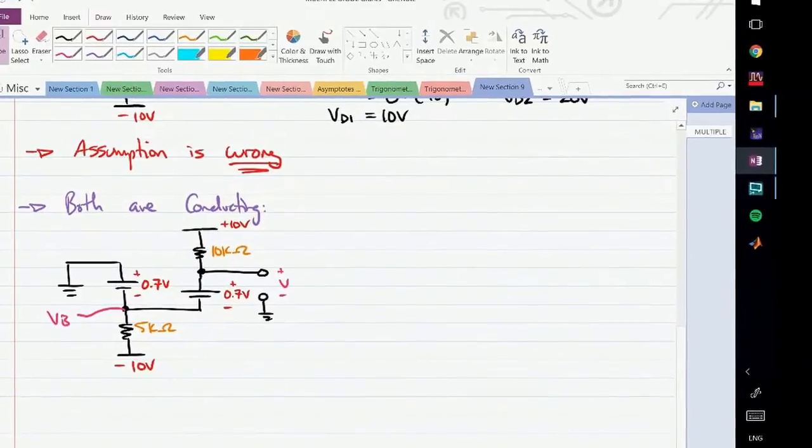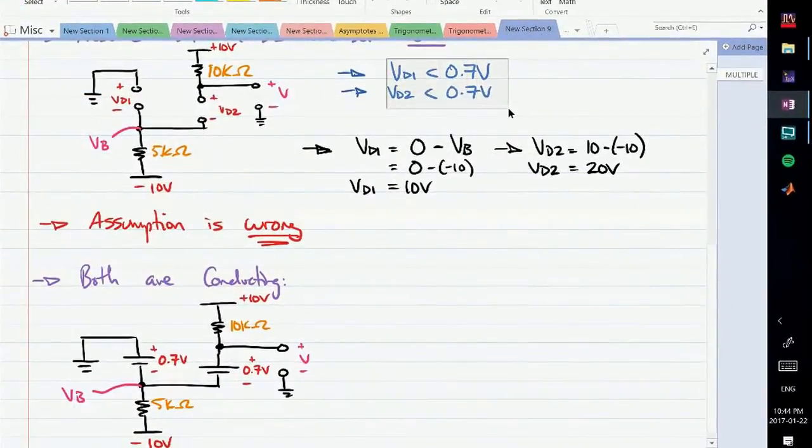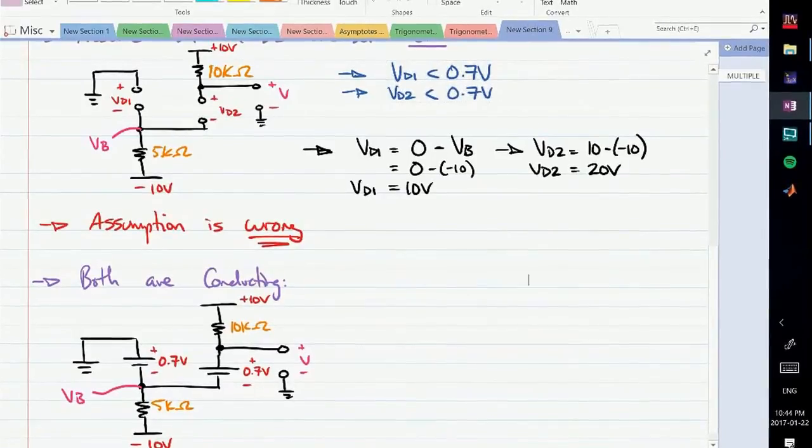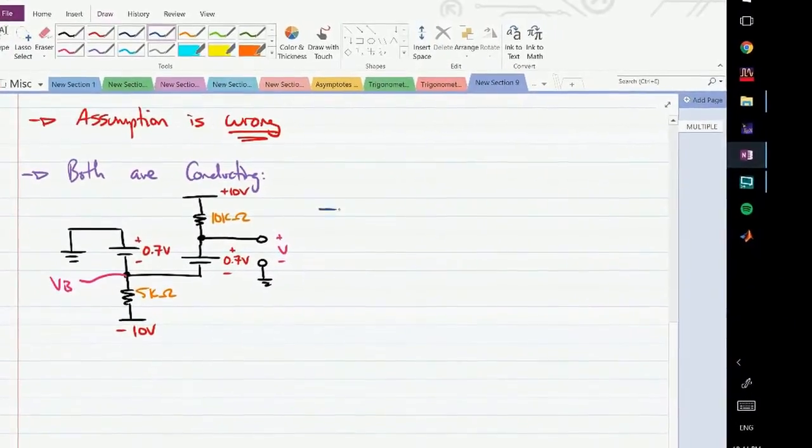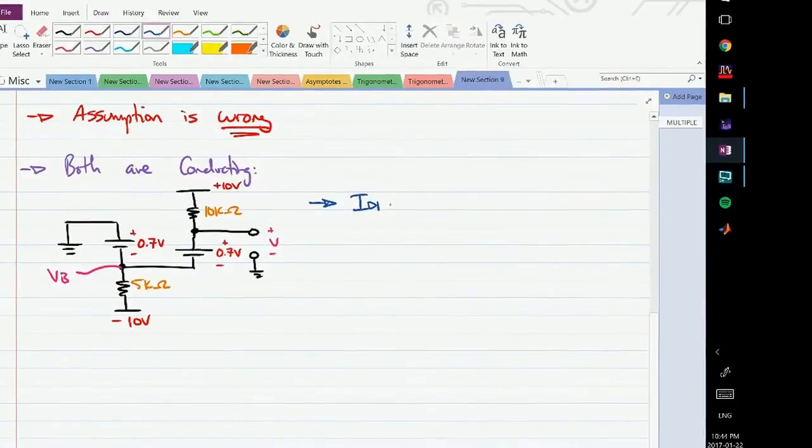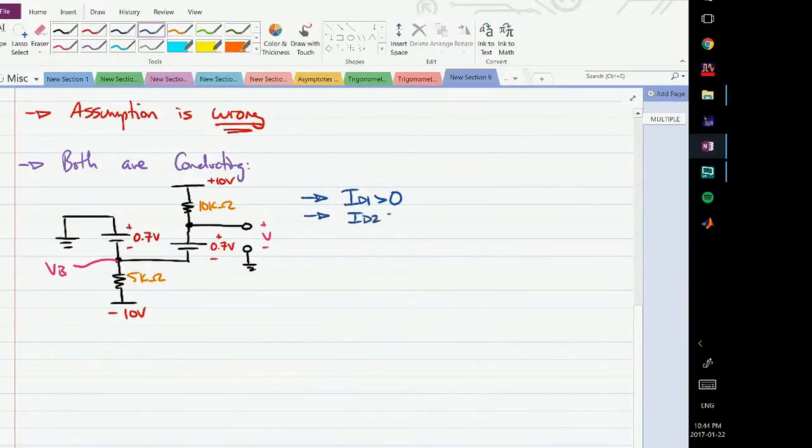Now the condition to check here is different. In the previous case, we checked that VD1 and VD2 were less than 0.7 because for the diode to be off, voltages across the diode must be less than 0.7. However, if a diode is to be on, the condition changes. The condition is that ID1 must be greater than 0 and ID2 must be greater than 0. ID2 is this current here, and ID1 is this current here. The currents through the diodes must be greater than 0. This we know from the theory of the diode - current can only flow in one direction, so this current must be positive. I'll call this current here I3. I have to determine these three currents to verify this assumption is valid.